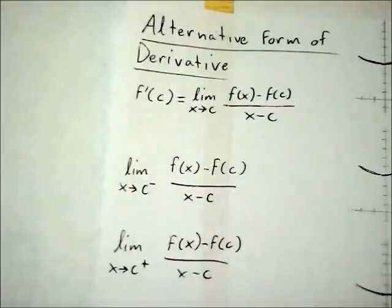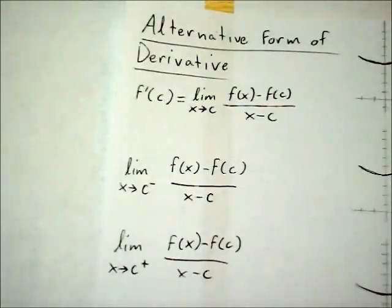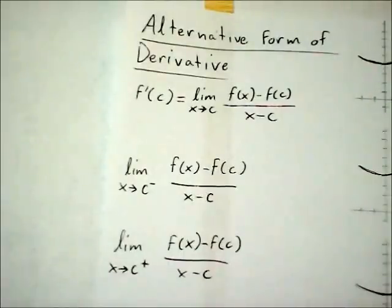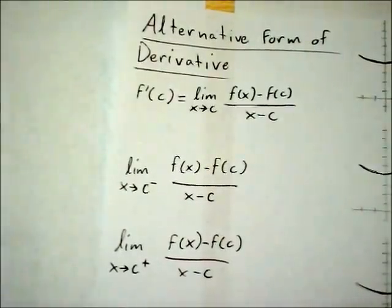Also, for f to be differentiable at x equals any constant c, f must be continuous when x equals c. Remember, a function f is not continuous when x equals c if the limit of f as x approaches c is not the same from both sides, as you can see in these graphs.